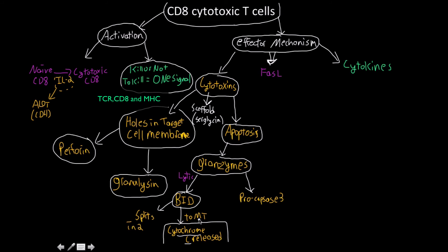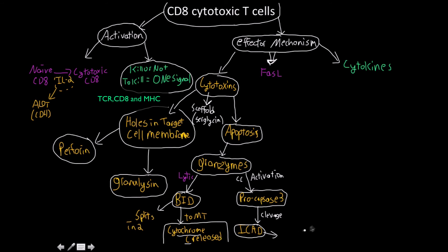Cytochrome C is an electron transport chain protein, so even if Procaspase-3 fails and viruses remain inside the cell, or if it is a cancerous cell, it will have no ATP to do its work. There is also a fail-safe through Procaspase-3: granzymes cause a conformational change activating Procaspase-3, which then cleaves ICAD, ultimately activating DNAases — enzymes that degrade and cut up the cell's own DNA.